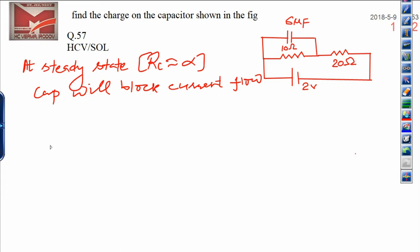It means it gets charged fully. In order to calculate the charge, how will you calculate the charge? Charge is equal to CV. We already know C is 6×10⁻⁶, so Q = 6×10⁻⁶ × V. Name this equation 1.